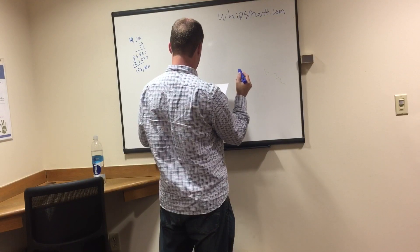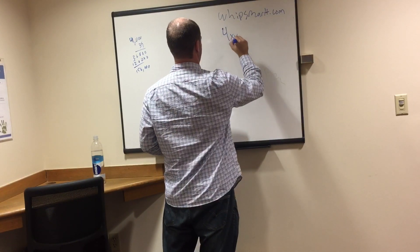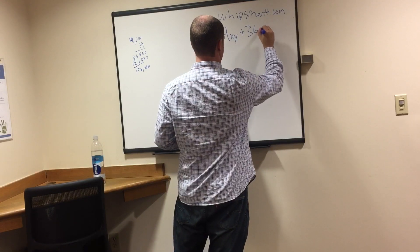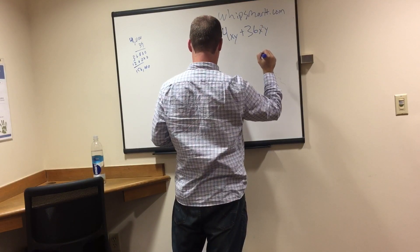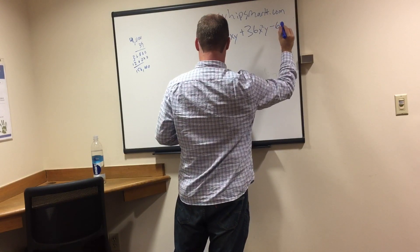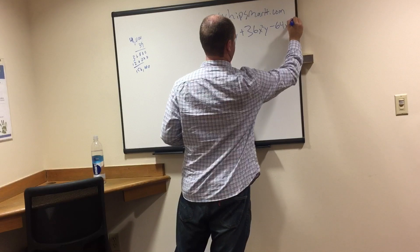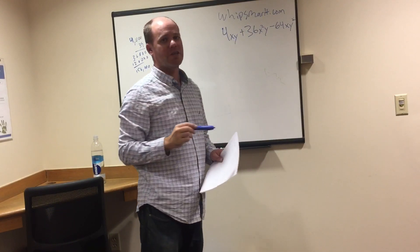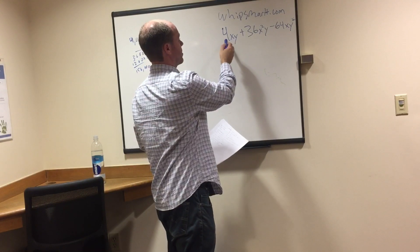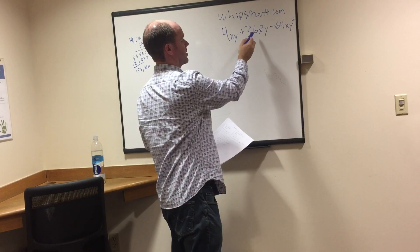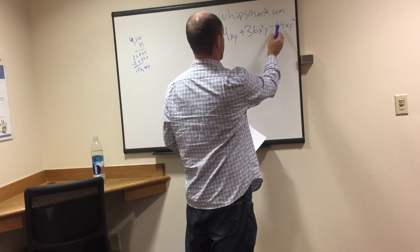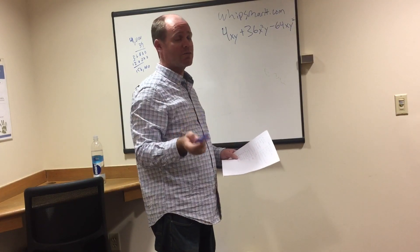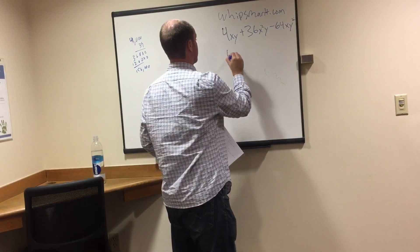There's two down — two real common ASVAB questions. Next one: factoring. So we have 4xy plus 36x²y minus 64xy². First thing we have to think about is what can we take out of all three of these. We look at the coefficients: can four go evenly into 36? Yes, four times nine is 36. Can four go into 64? Also yes, four times 16 is 64. So we know we can take out a four.